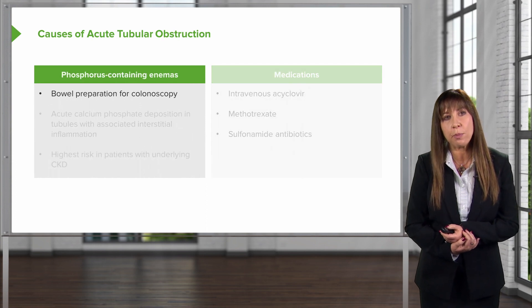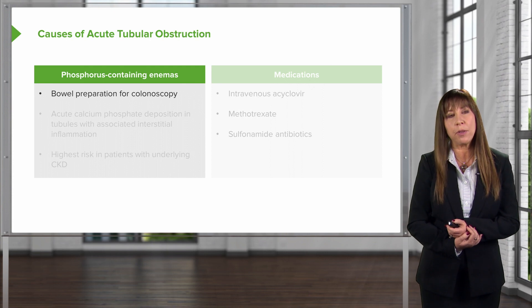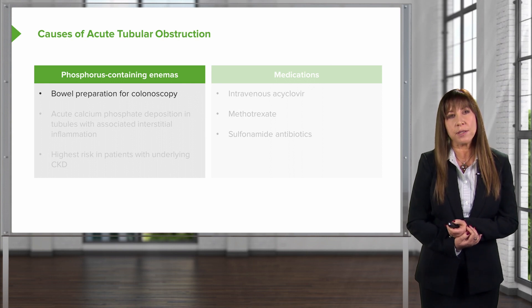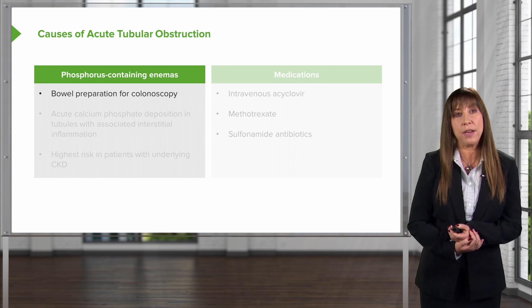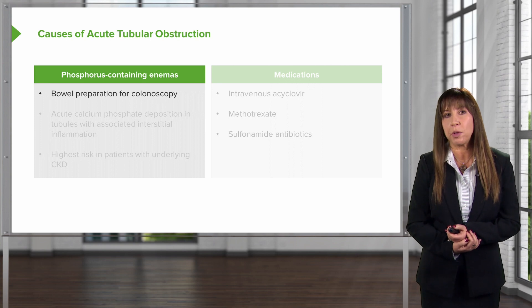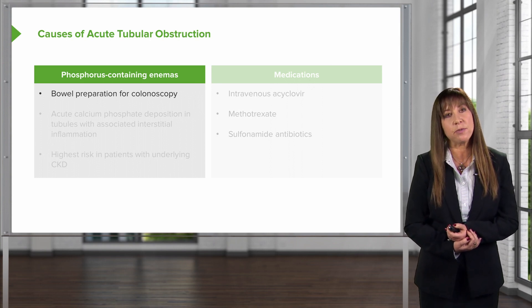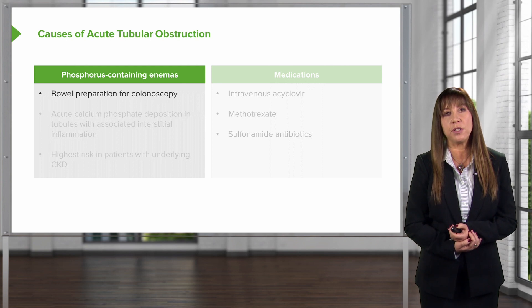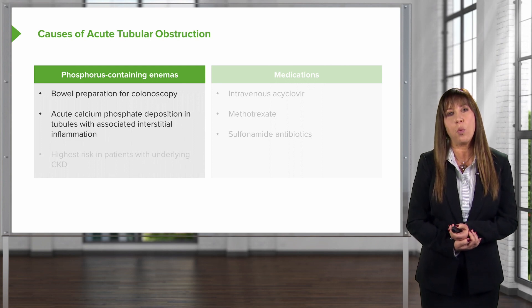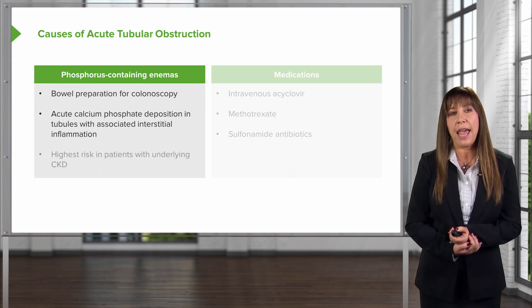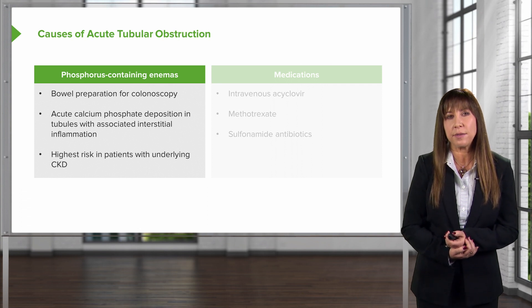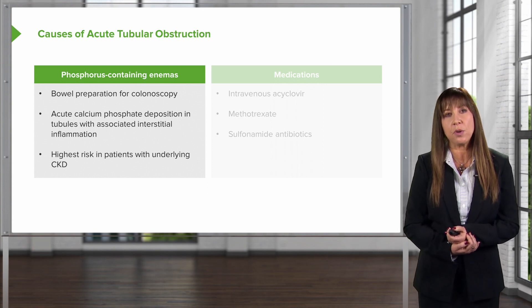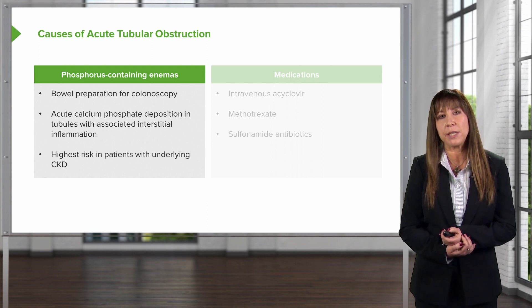Phosphorus-containing enemas are also a problem, and that wasn't widely recognized until around 2002. This includes bowel prep for colonoscopy. Our patients might be undergoing a sigmoidoscopy, and gastroenterology colleagues might give something like a sodium phosphorus enema or laxative. In the setting of volume depletion, calcium phosphorus can precipitate in the tubules and interstitium, which is associated with interstitial inflammation. The highest risk is in patients with underlying chronic kidney disease — this is a very significant situation, and we have even had patients who required transplant over this.